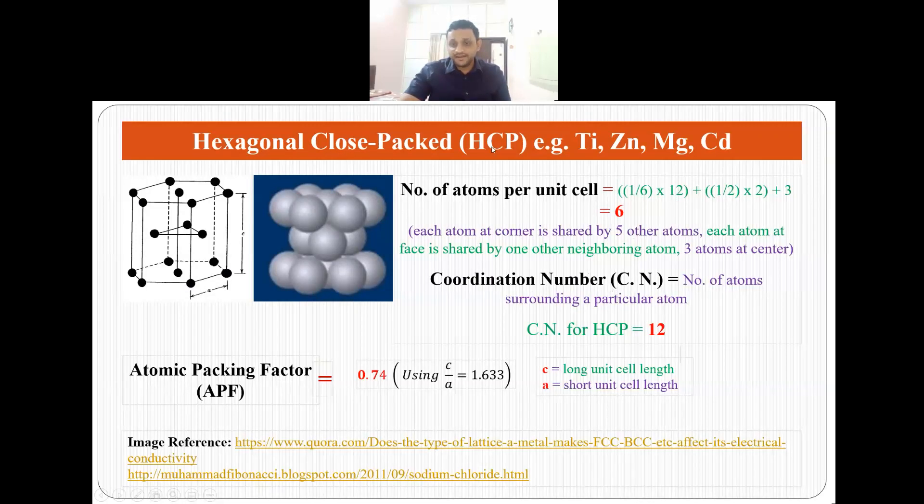The coordination number in case of HCP is also 12, that means each atom in a HCP structure is surrounded by 12 other atoms. Here also the atomic packing factor is 0.74. Here we use C by A equals to 1.633 where C is the longest unit cell length and A is the short unit cell length. This is C and this is A.